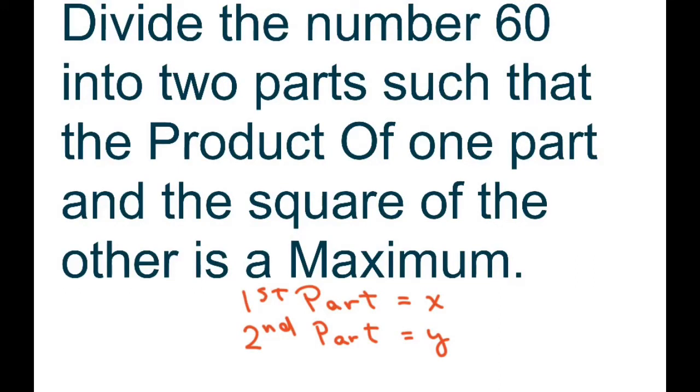Hi everybody, we're going to divide the number 60 into two parts such that the product of one part and the square of the second part is a maximum. I'm going to let the first part be equal to X and the second part equal to Y.